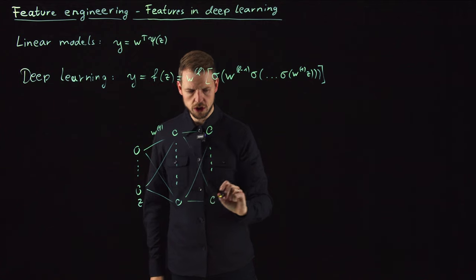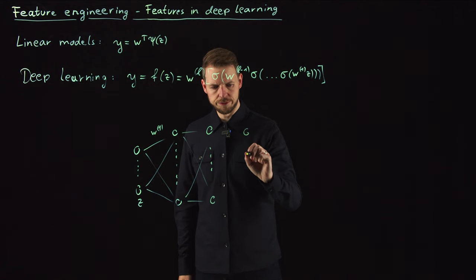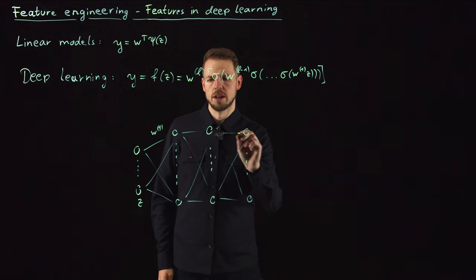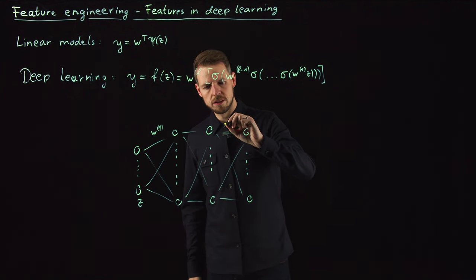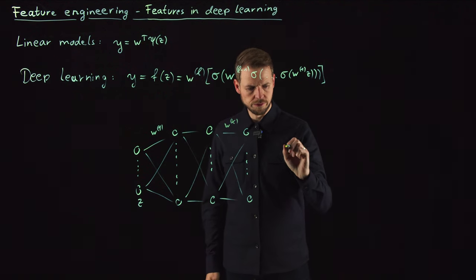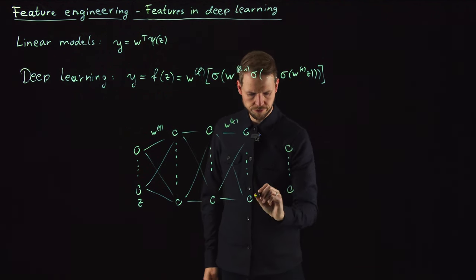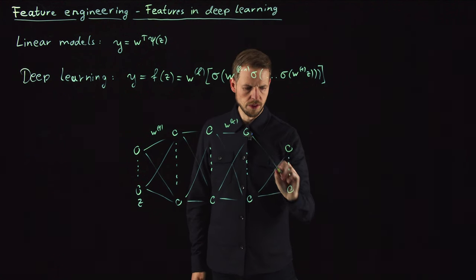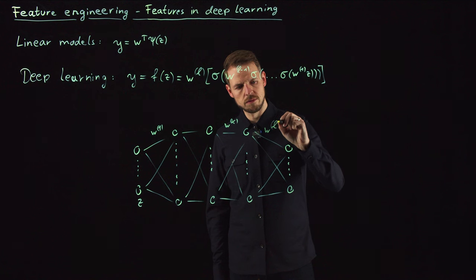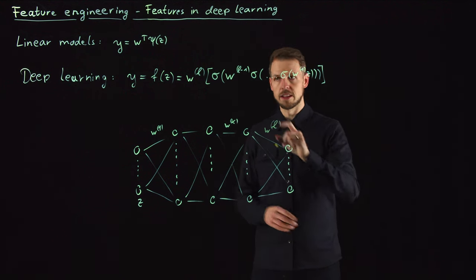You have the second hidden layer, again some connections, next hidden layer, some connections, and for all of these you have your weight in the kth layer until the very end where you have your last layer w L. This then gives you the output y.